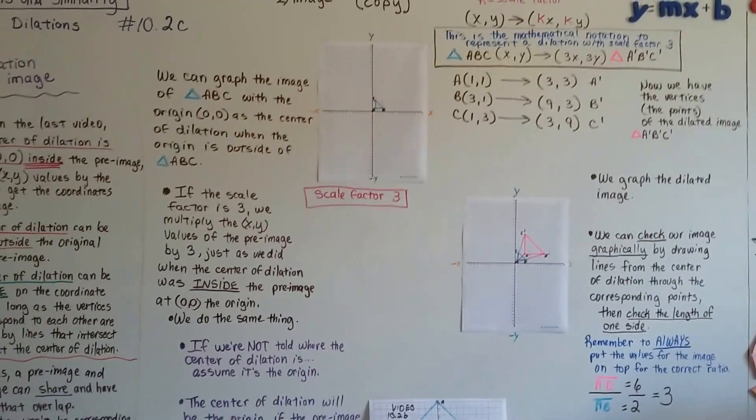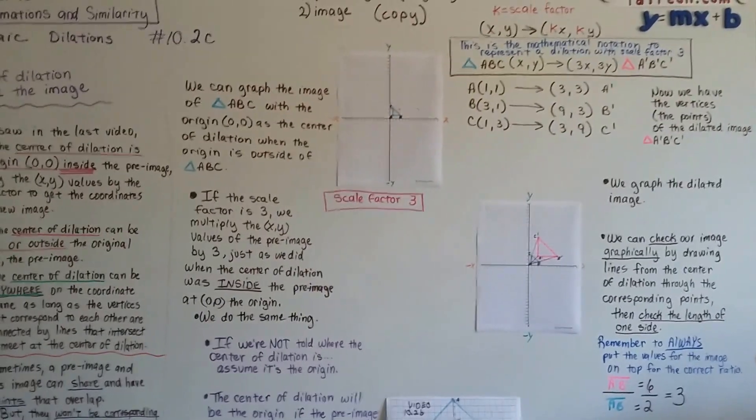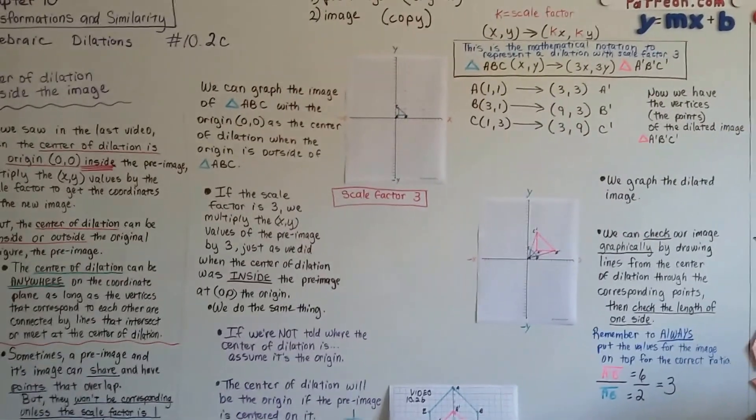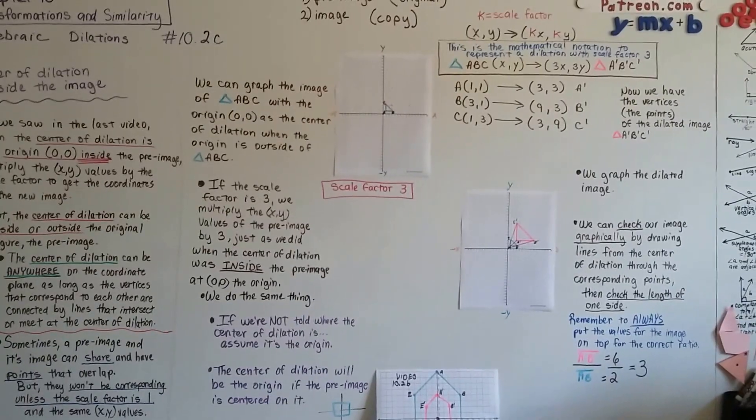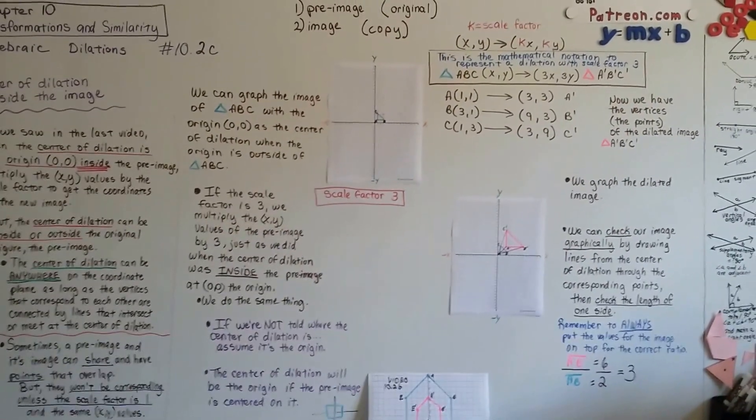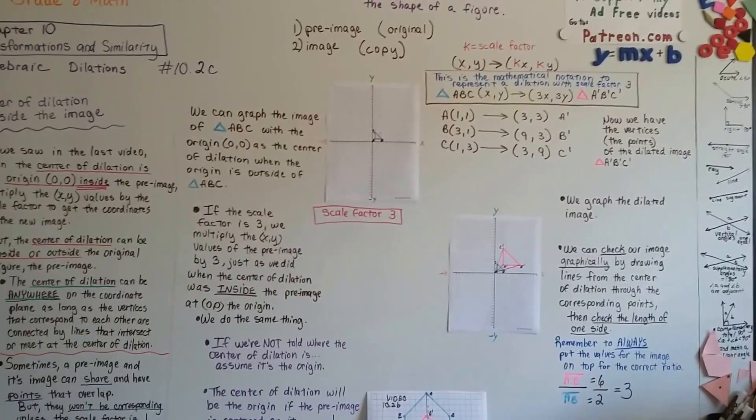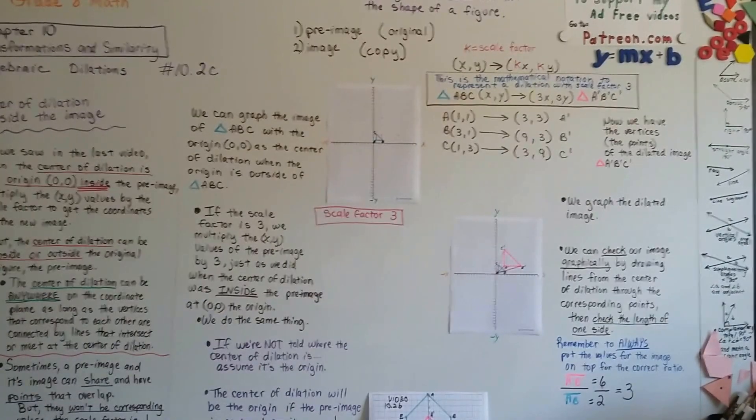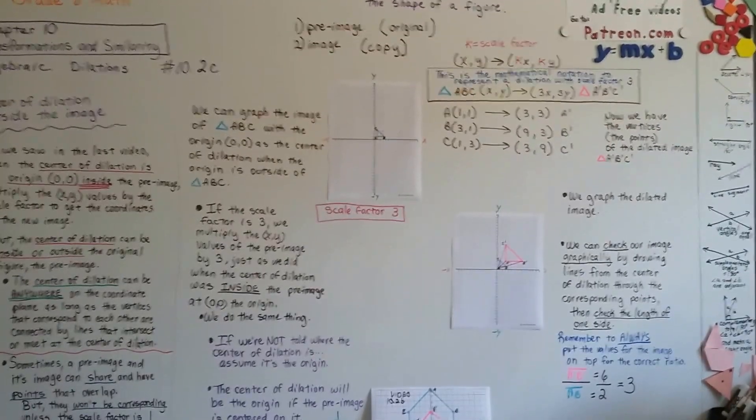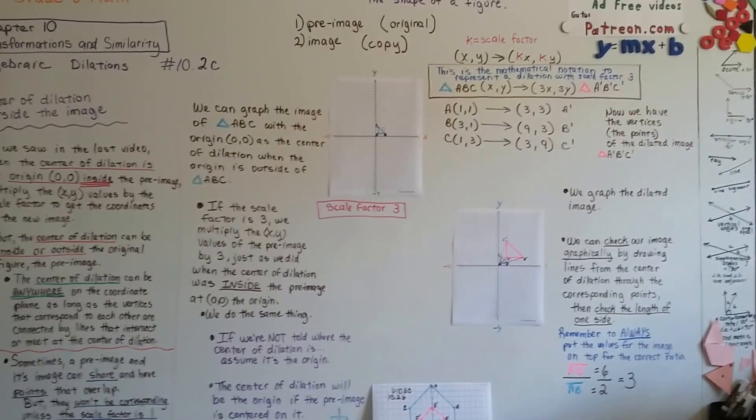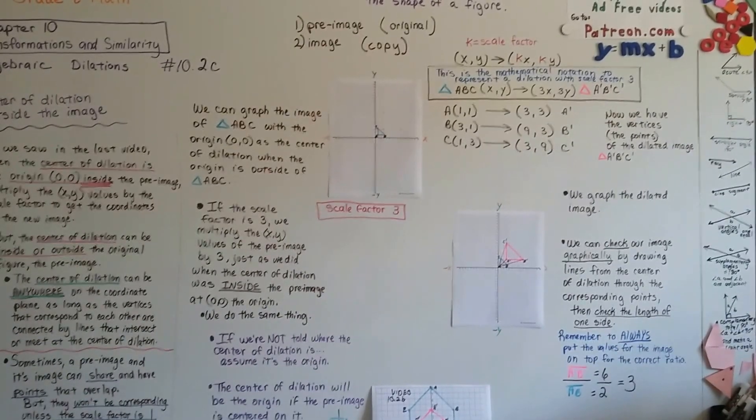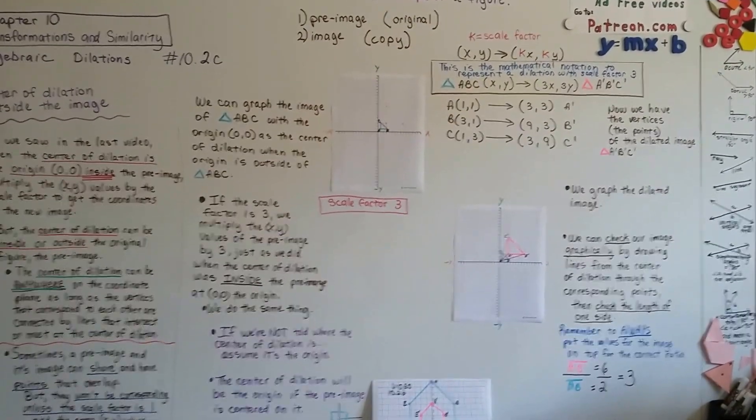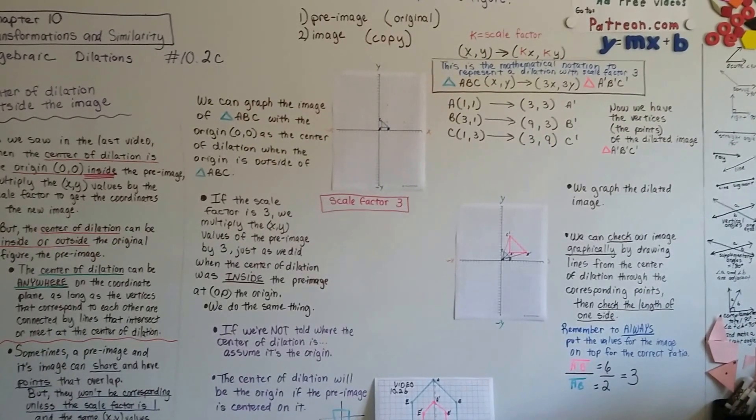If you're really confused, I advise you to go back to 10.1a and watch about dilations from the beginning, because you've probably gotten a little bit over your head. We're going to continue on talking about algebraic dilations. We're going to talk about writing an equation for it from a word problem in 10.2d. Keep going. I'm proud of you. Keep trying, and I'll see you next video.